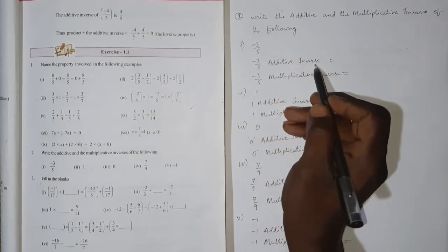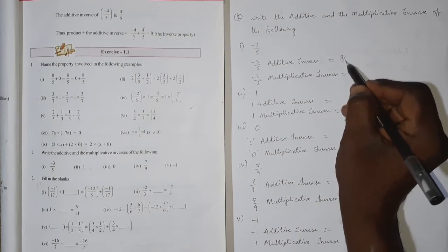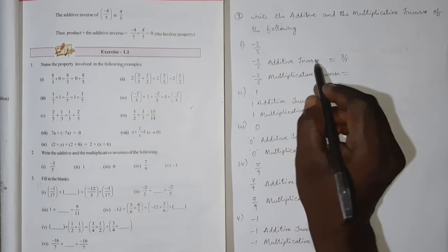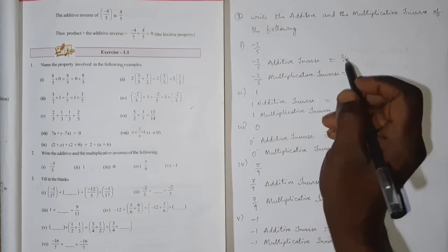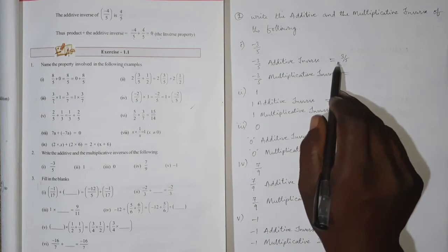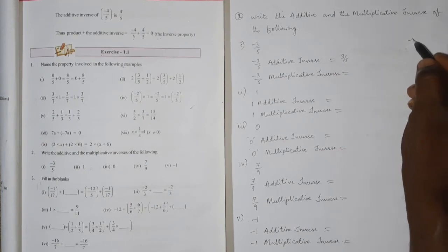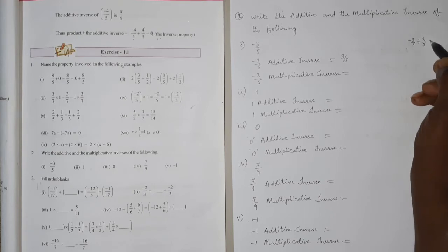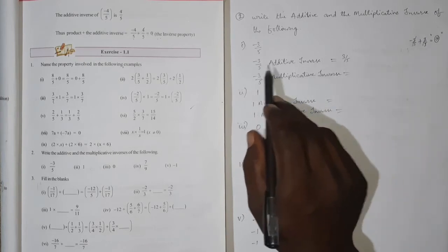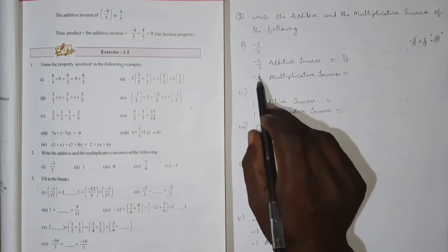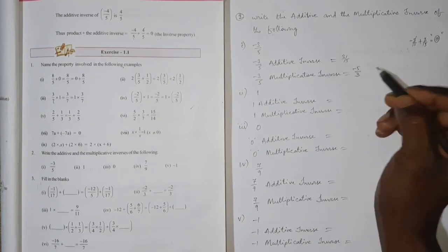The additive inverse of minus 3 by 5 is plus 3 by 5, because minus 3 by 5 plus 3 by 5 cancels to give 0. So minus 3 by 5 is the additive inverse of plus 3 by 5.